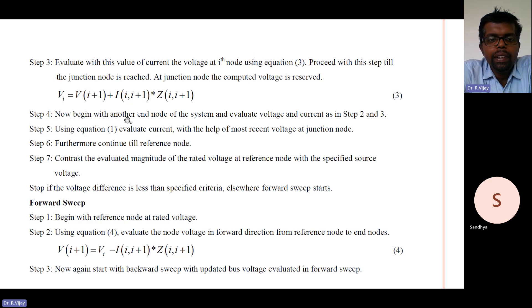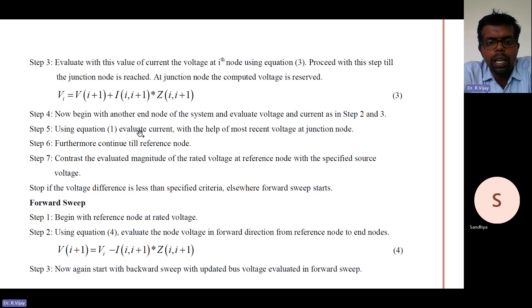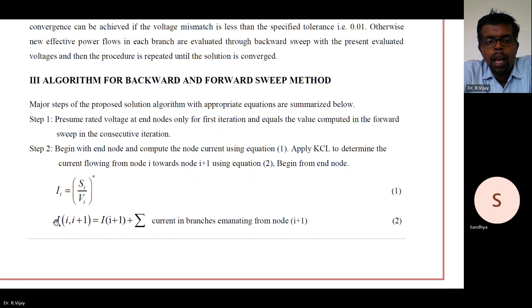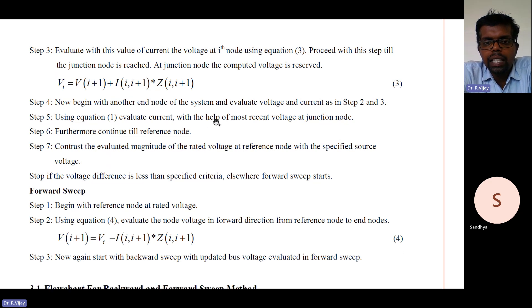Step 4: Begin with another end node of the system and evaluate the voltage and current as in steps 2 and 3. Step 5: Using equation 1, evaluate the current with the help of the most recent voltage at the junction node — that is I = (Sᵢ / Vᵢ)*. Use this equation to evaluate the current at the junction node.